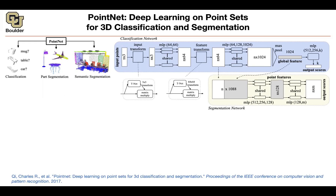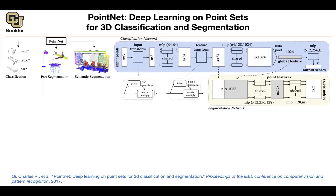For segmentation, we need both local and global features — similar to images where you need a global context and fine local details. You take the global feature from the classification branch (size 1024) and copy it row by row N times. Then you concatenate the local features from the earlier 64-dimensional layer, giving you an N-by-1088 matrix (1024 + 64).